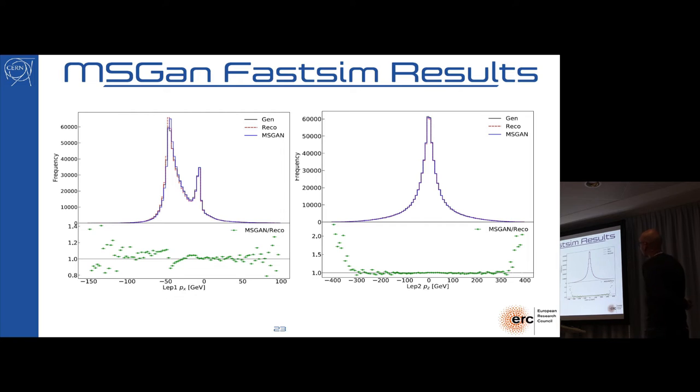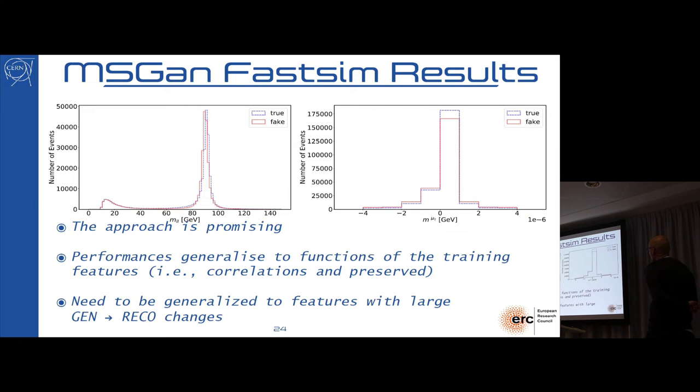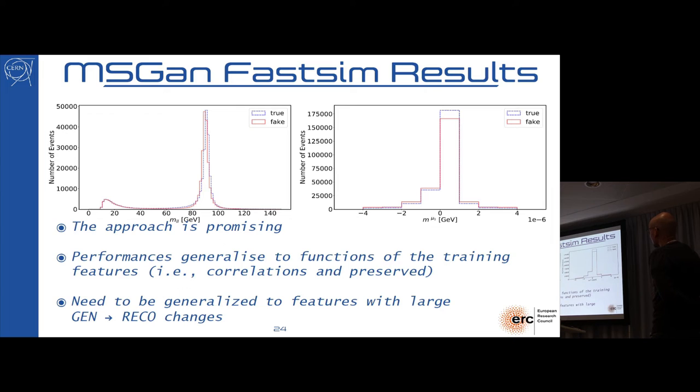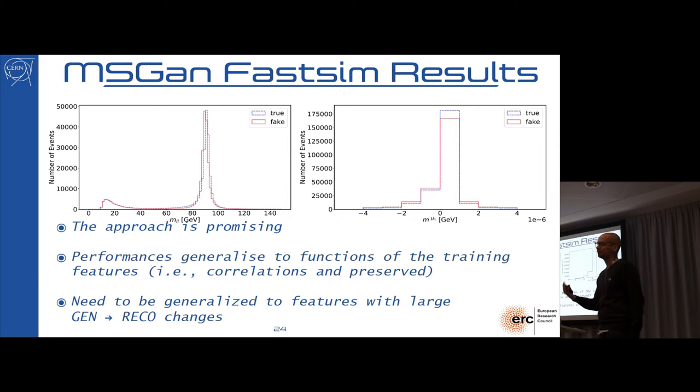Somehow this would be analysis-ready, at least because when you do standard model measurements you only care about the core of this distribution, but there are still many things to understand. When you try to predict, out of these quantities that you train the GAN for, you try to predict functions of this quantity, you see that the behavior is not bad. There is again a shift, which comes directly from this shift, but this is something that we think we can cure with a little bit more effort. This comes out pretty much okay, which is the mass of the lepton.